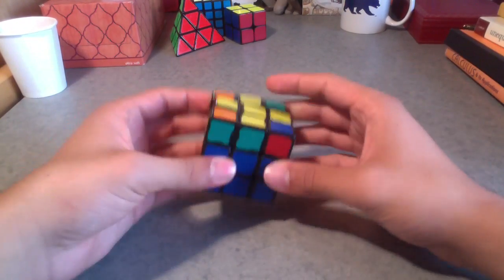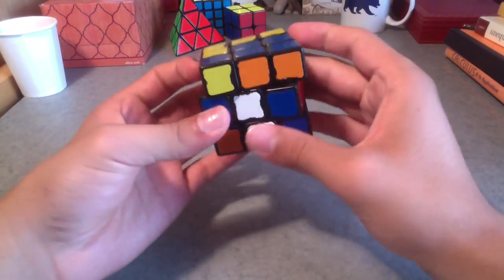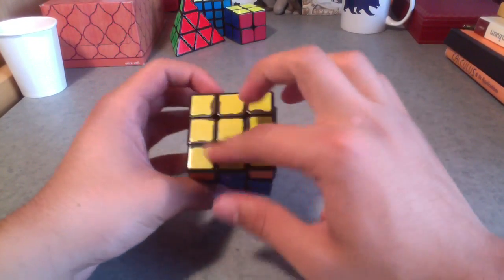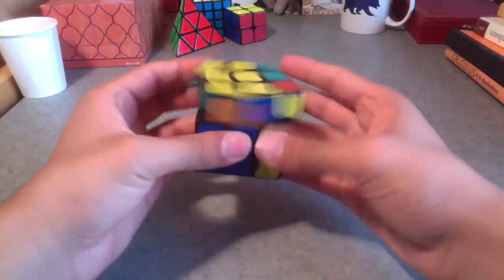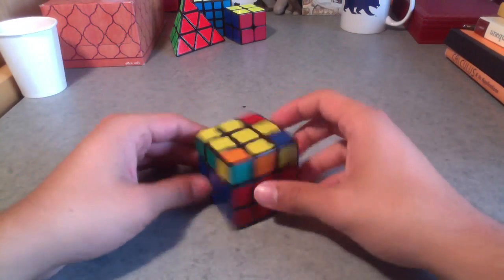So now from here, the next step is to, the next step that we're going to try to do, once you have the cross, is to also solve all the, orient all the corners. So to do this, what we're going to need to do is, our goal is to get it to this fish shape.